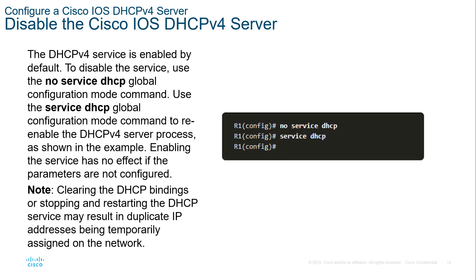It's not just about configuring DHCP — the service also needs to be turned on. You can disable DHCP by issuing 'no service dhcp', and re-enable it with 'service dhcp'. Both commands are done at global configuration.